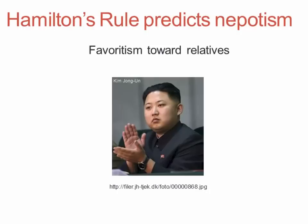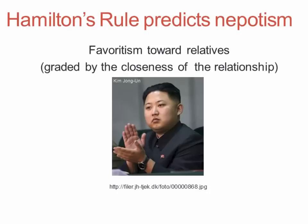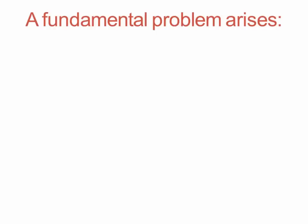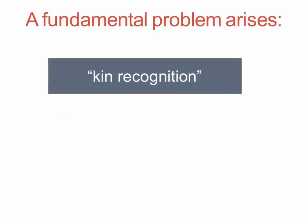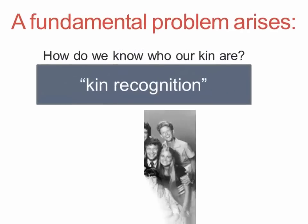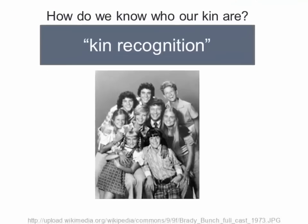Another way of saying this is that Hamilton's rule predicts nepotism — that's simply favoritism towards relatives. We're certainly not surprised when we see parents do things that favor their children. If you're the dictator of North Korea, it means you pass on leadership to your own son whether he's qualified to lead or not. A fundamental problem arises on the basis of Hamilton's rule, and that problem has to do with what's called kin recognition — simply the question: how do we know who our kin are?